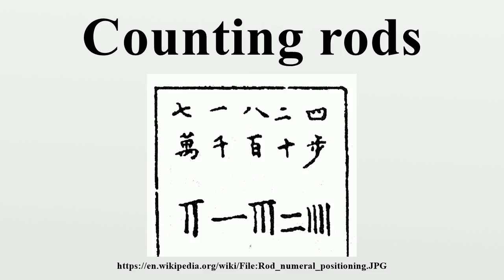The method for using counting rods for mathematical calculation was called rod calculation or rod calculus. This rod calculus can be used for a wide range of calculations, including finding the value of pi, finding square roots, cube roots, or higher order roots, and solving a system of linear equations. As a result, the character is extended to connote the concept of planning in Chinese — for example, the science of using counting rods refers not to counting rods themselves but means operational research.